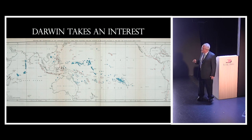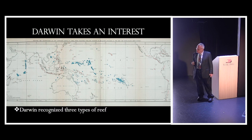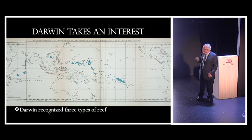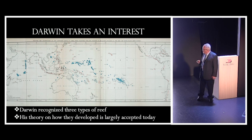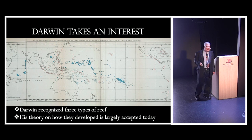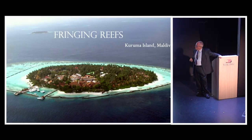Darwin thought about this and proposed a theory that's pretty well stood the test of time until very recently. He recognized three types of reef that he saw as stages in reef formation, and his theory is still the main one taught in schools and textbooks today. There has been a recent challenge to it, but this is the idea most people know about.